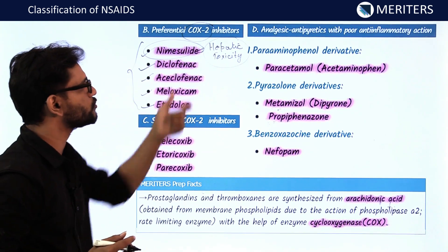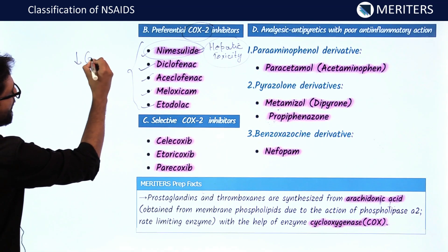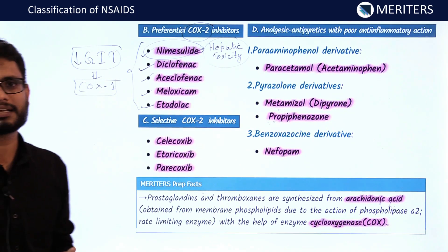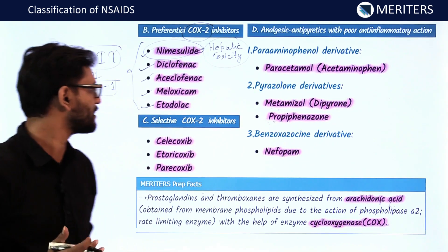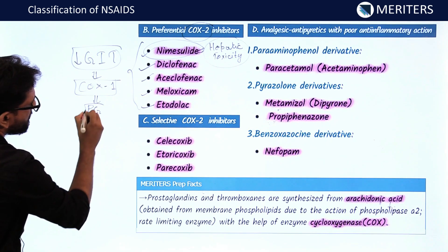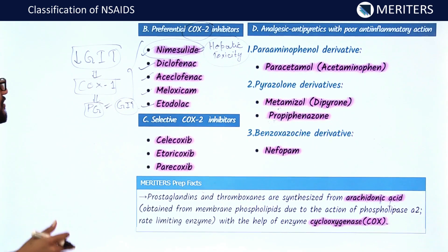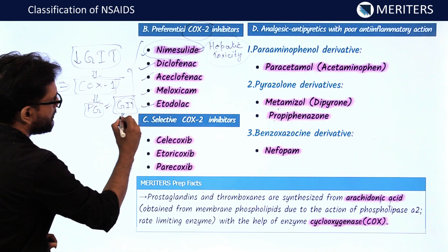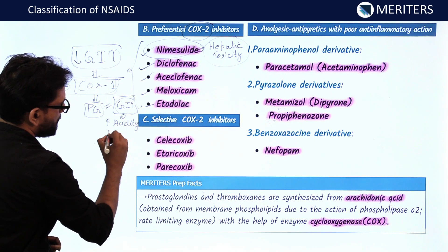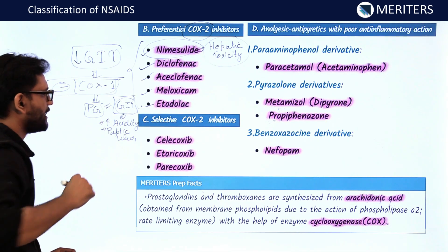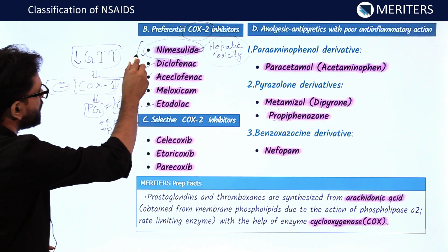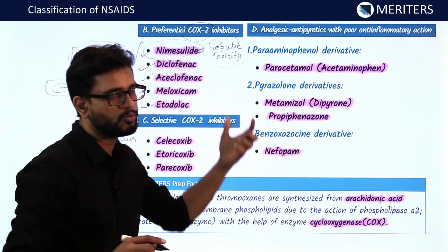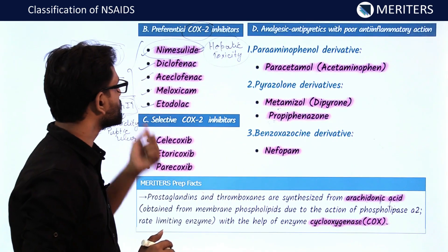The rationale for developing preferential COX-2 inhibitors is that they have fewer GIT complications. GIT complications are generally due to the COX-1 enzyme. COX-1 produces mucoprotective prostaglandins that protect the gastric lining. If we inhibit COX-1, these protective prostaglandins are not generated and the GIT becomes upset, leading to increased acidity or peptic ulcers. To reduce GIT side effects, we let COX-1 work and preferentially inhibit COX-2 instead.